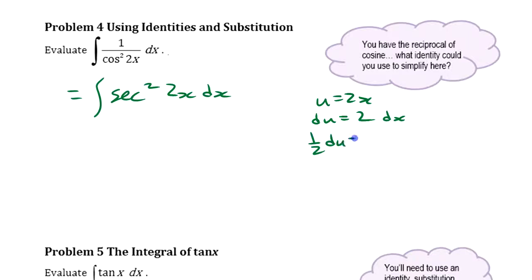so we're going to make 1 half du equal dx. I'll make this dx into 1 half du, put the 1 half in front: 1 half integral of secant squared u du. That 2x became u there.